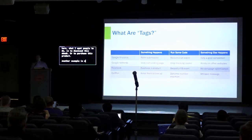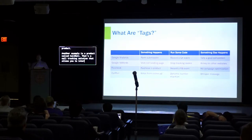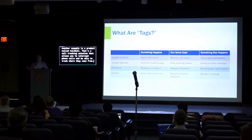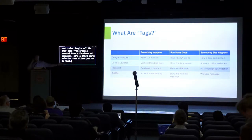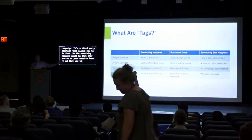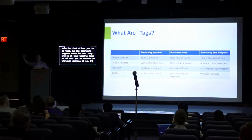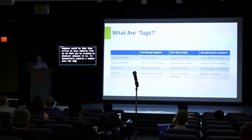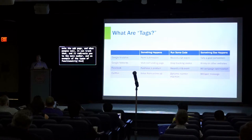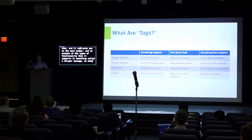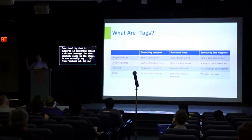Another example is a product called CallRail — a call tracking solution that allows you to intercept phone calls and track where they came from: a particular Google ad, organic search, or a Facebook campaign. The something-happens could be that they arrive at your website from an ad. It dynamically inserts a number onto the web page, and when people call, it can track and redirect them to the main number. It supports a feature called a whisper message — when somebody picks up the phone, it can say 'call from Facebook ad' so you know where the call is coming from.